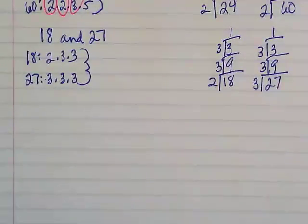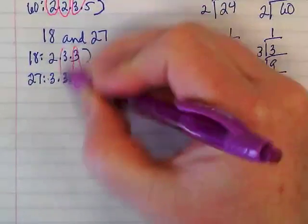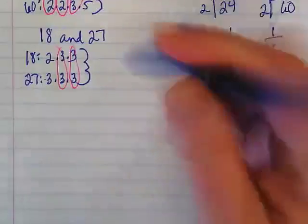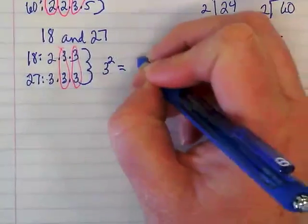What do these two have in common? Three. How many threes? Two each. Two each. So that means the GCF is going to be 3 to the second power, which is equal to 9.